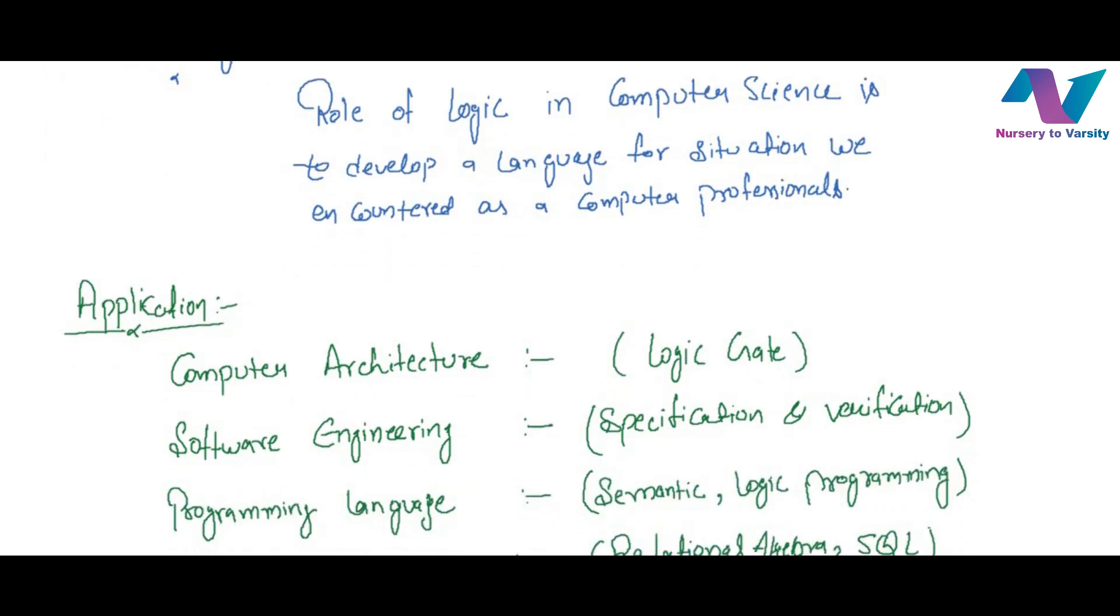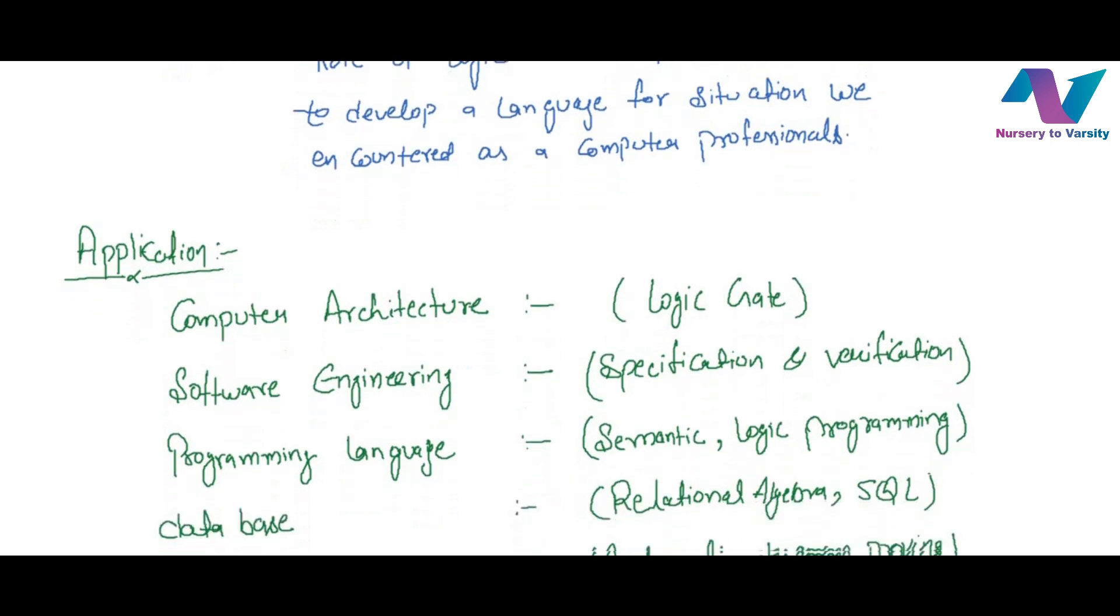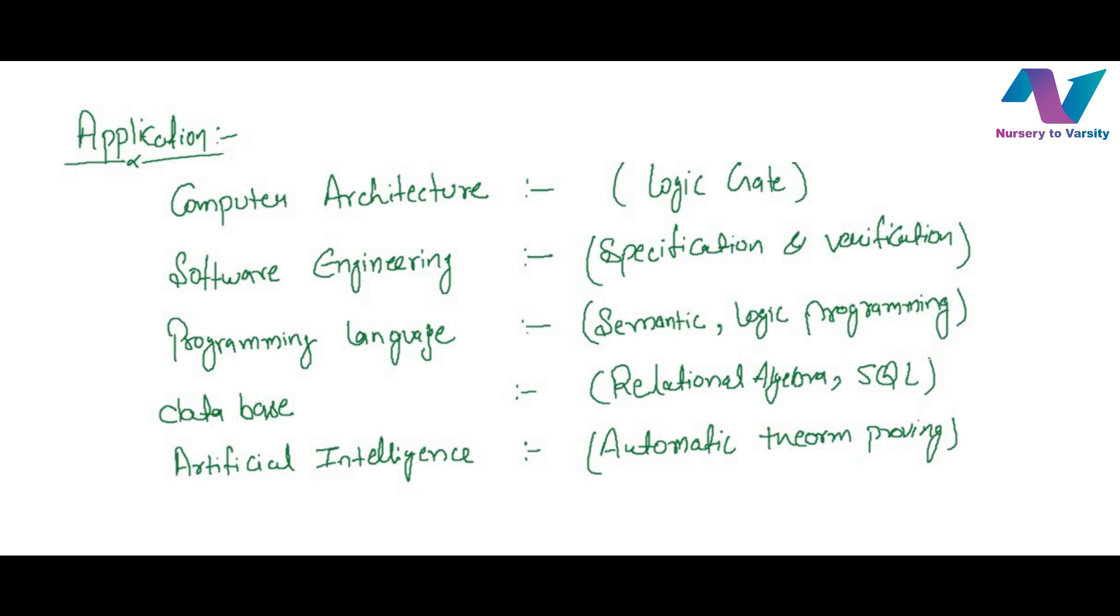So apart from the understanding of basic mathematical reasoning, application of logic can be considered in computer science. Here I have discussed few examples in the terms of computer science subjects where logic is going to apply. In computer architecture we are dealing with logic gates. In software engineering we are dealing with specification and verification. In programming language we are dealing with semantic and logical programming. If we talk about database it means we are talking about SQL and relational algebra. And if we talk about artificial intelligence it means we are talking about automatic theorem proving.